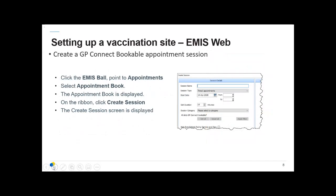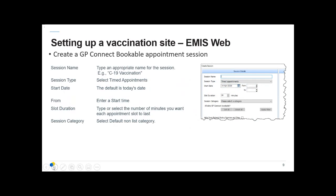Now we need to put those slots into a session. From the EMIS ball, click Appointments and Appointment Book, and on the ribbon click Create Session. From there, name your session — again noting that this may be visible to people booking in, so it needs to be explicit that this is the vaccination.